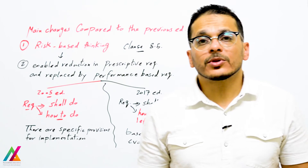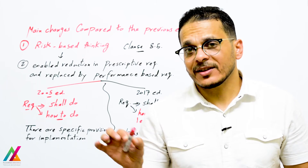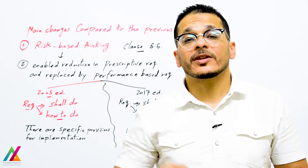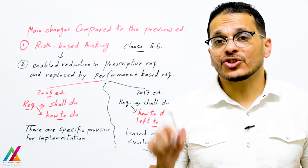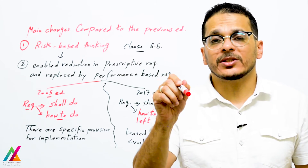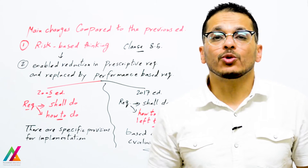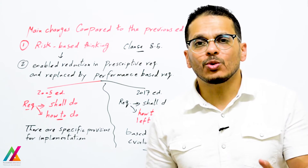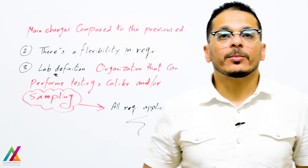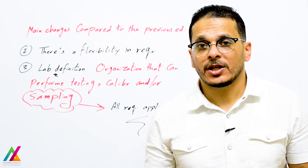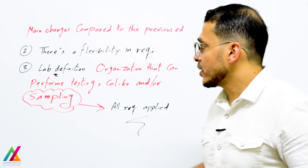For example, job descriptions are not written directly as a requirement in this edition as they were in 2005, but the requirement to describe jobs for each employee is still there. How to do it is left to the lab. This creates flexibility in requirements in this edition, which reduces the documents used inside the lab.